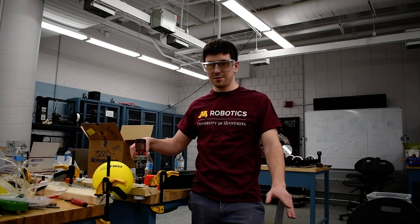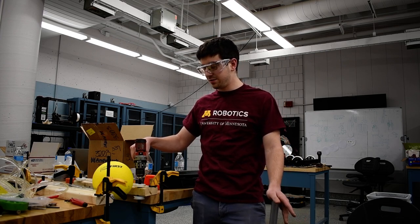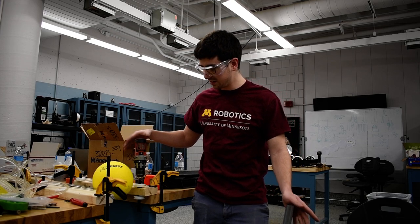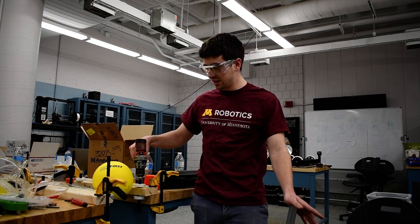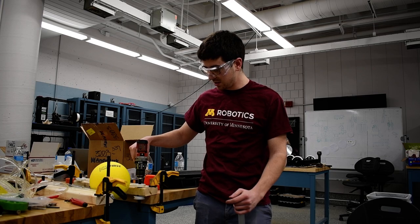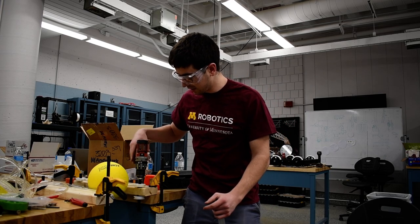All right, so this is our first hopper prototype. It's an active hopper. We plan to have this hold about five balls. This is not at full length yet, but what we're using is just a pulley system with polycord here.